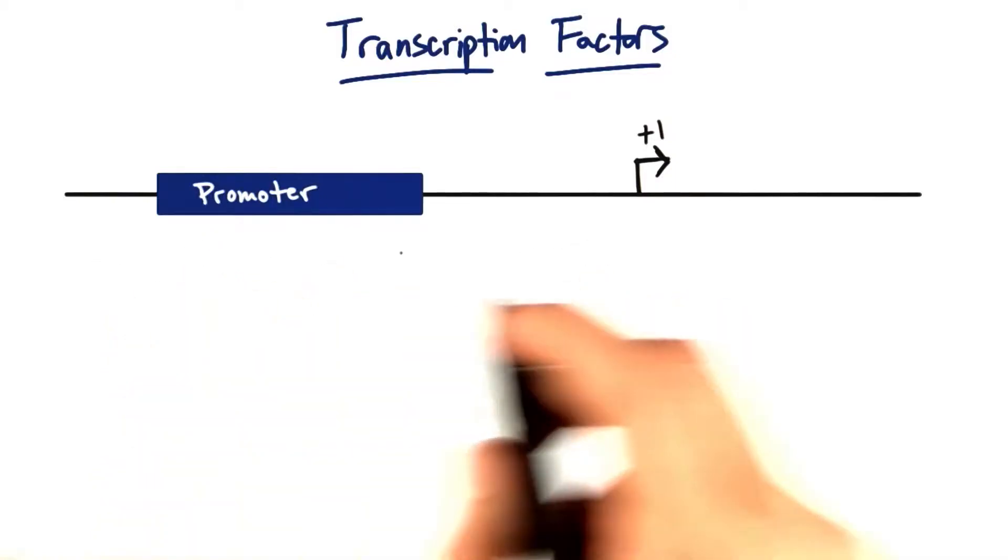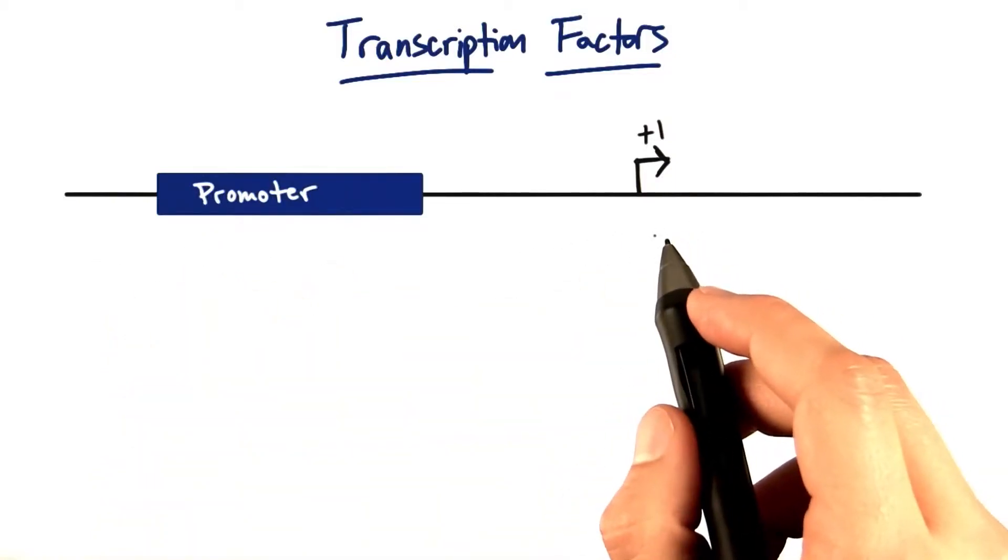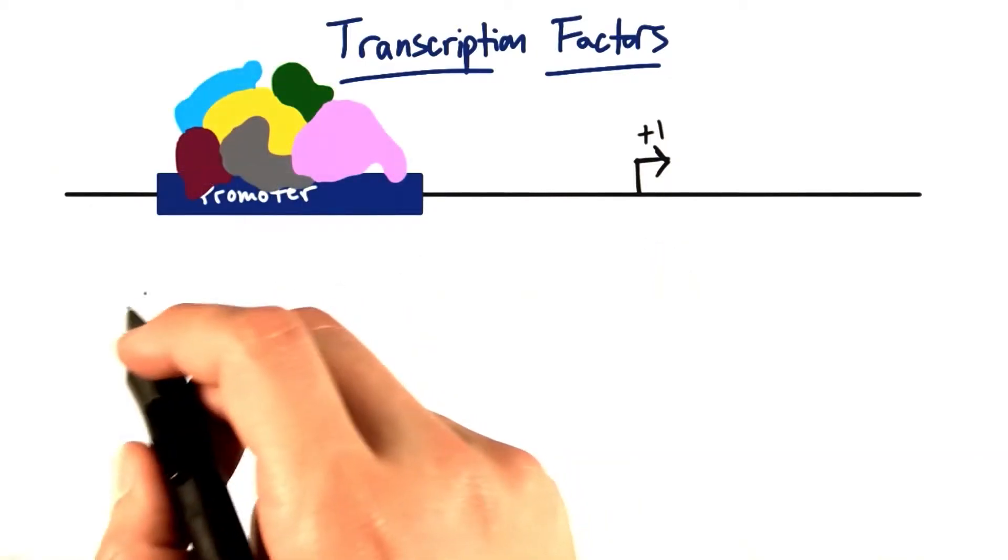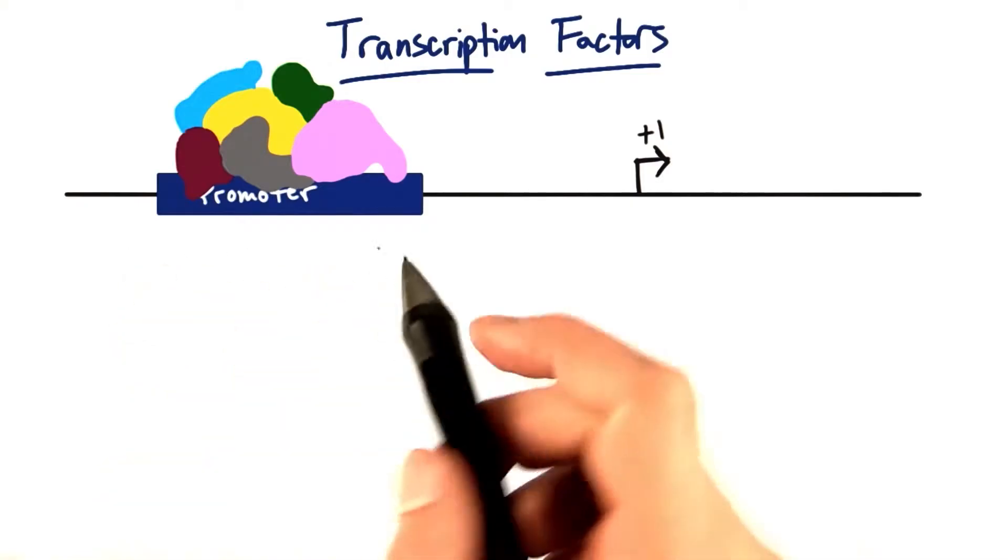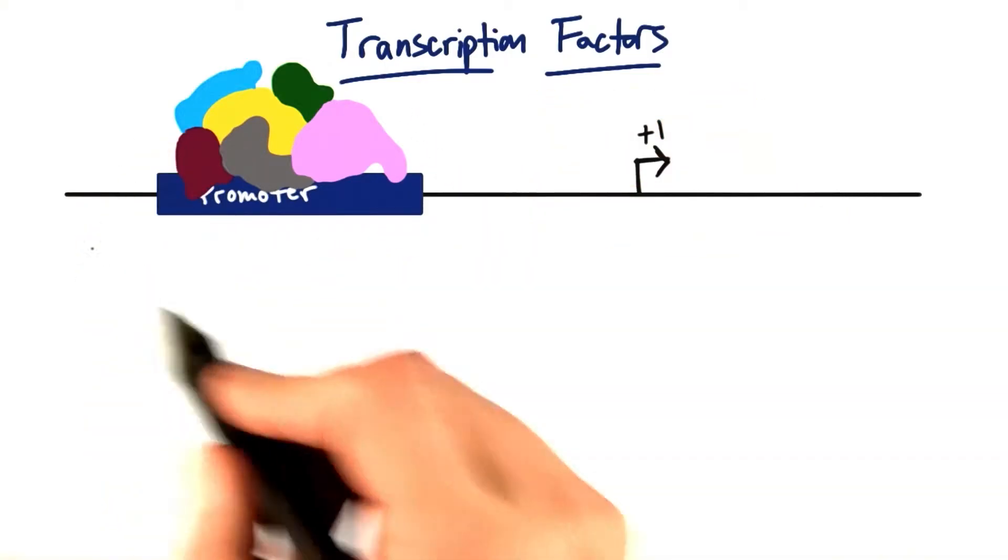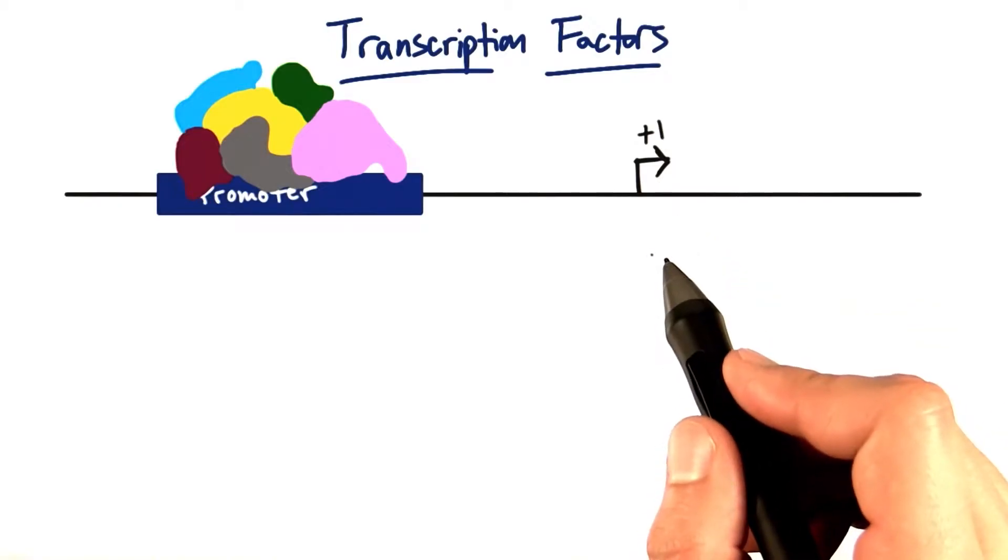Promoters are typically found in front of the transcription initiation site, though they don't always have to be. This serves an obvious purpose as a landing platform for all the proteins that come together to initiate transcription at this spot here.